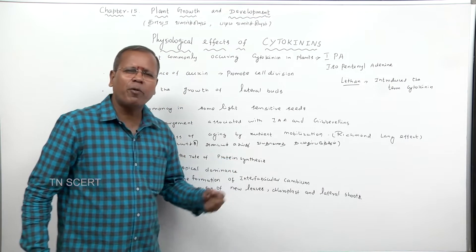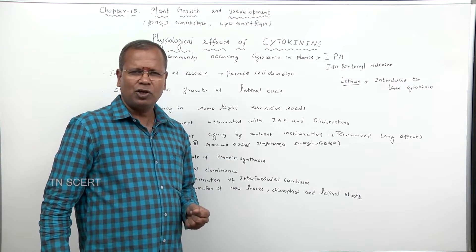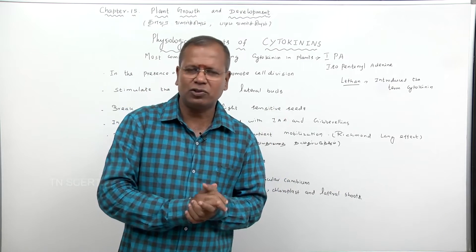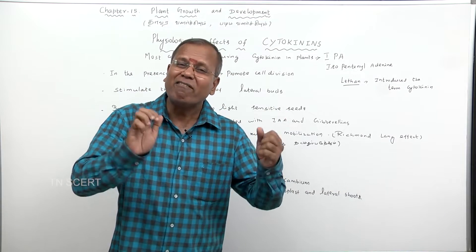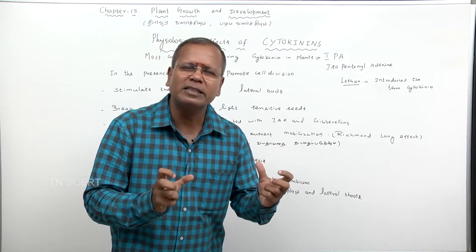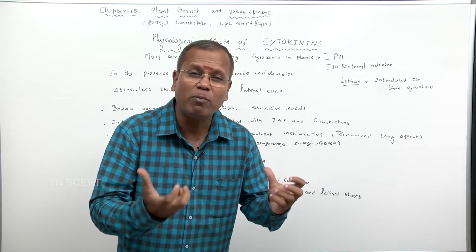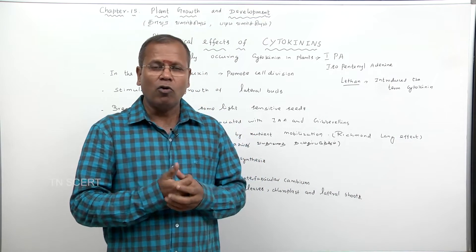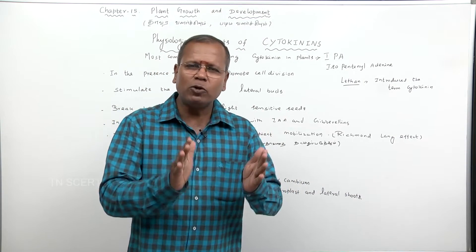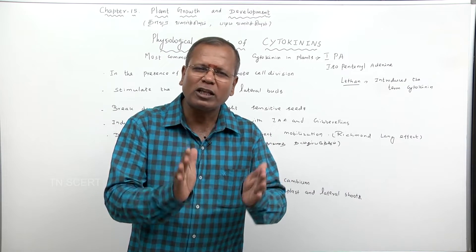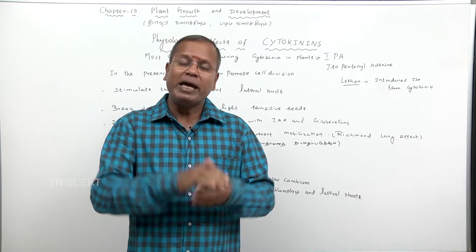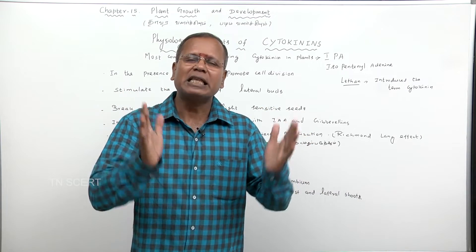Cytokinin increases the rate of protein synthesis. Proteins are known as the bodybuilders of the cell. Protein synthesis occurs at ribosomes, which act as protein factories. Cytokinin stimulates protein synthesis.